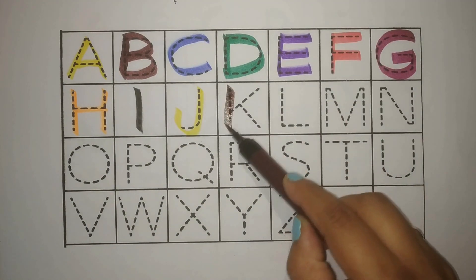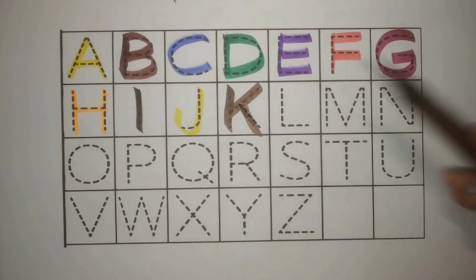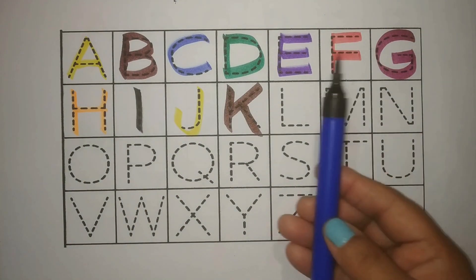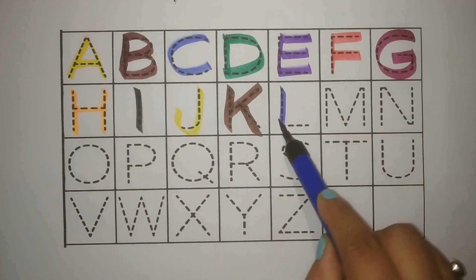Brown, K, K for kite, patang. The kite flies high in the sky. Blue, L, L for letter.